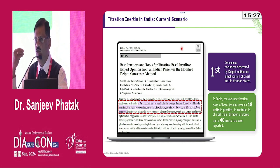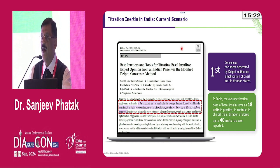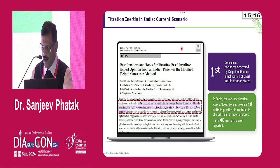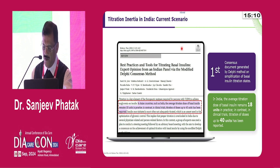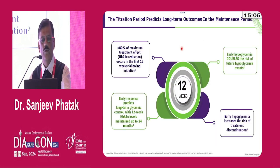The patient stays on that 10-unit dose, and when they come for follow-up maybe three or six months later, they're still on 10 units and blood glucose does not come down. HbA1c rarely falls. This titration inertia is very much present — from physicians, educators, and the patient's point of view. The titration period deserves special emphasis because it is the most critical period after insulin initiation.